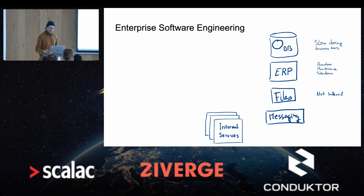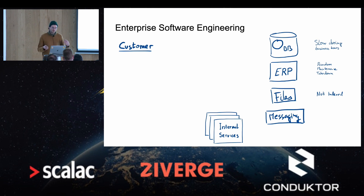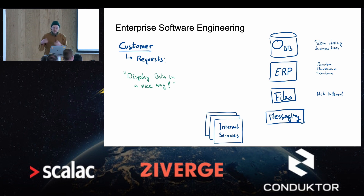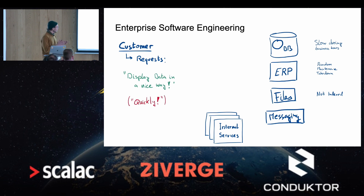That's where you're starting. On the left hand, you have customers. Maybe they're internal, maybe they're the ones giving your business money. And these customers have requests. The typical request is: hey, display me some data in a nice way — some report, whatever. Give it to me in a really great way, and please do it quickly, cheaply. Please do it by tomorrow because we're in a rush.